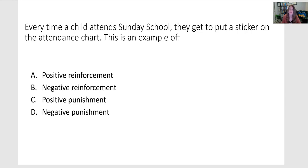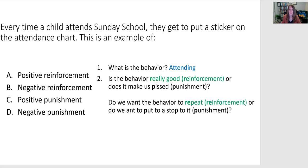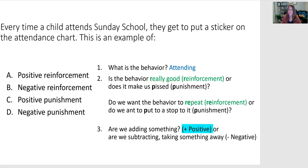Every time a child attends Sunday school, they get to put a sticker on their attendance chart. The behavior is attending regularly, and you can assume based on this prompt that the people implementing this chart want to reinforce that — they want it to continue. And in this case, the sticker is something new; you didn't have the sticker before and now we're giving you the sticker. So that's positive reinforcement.